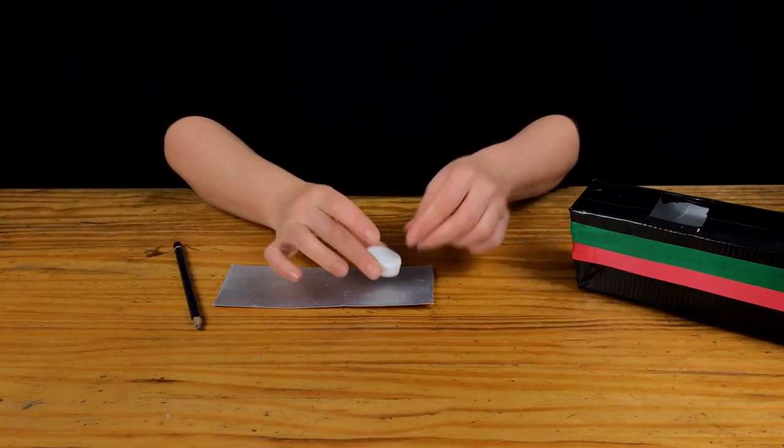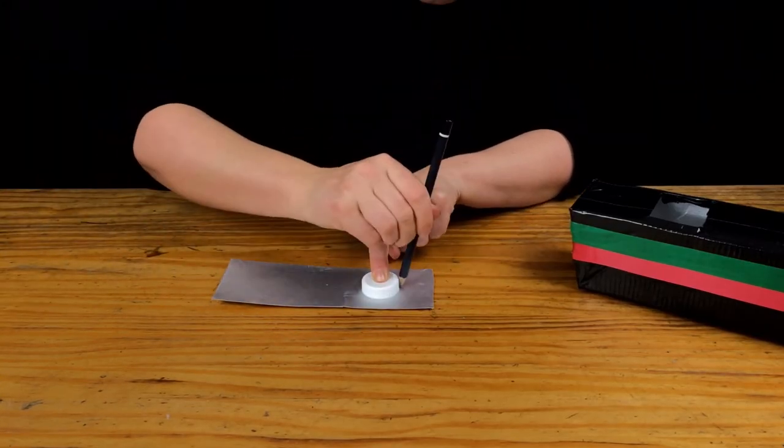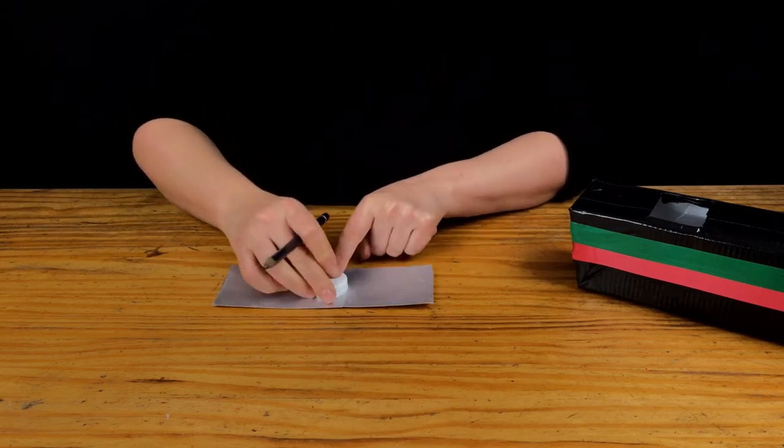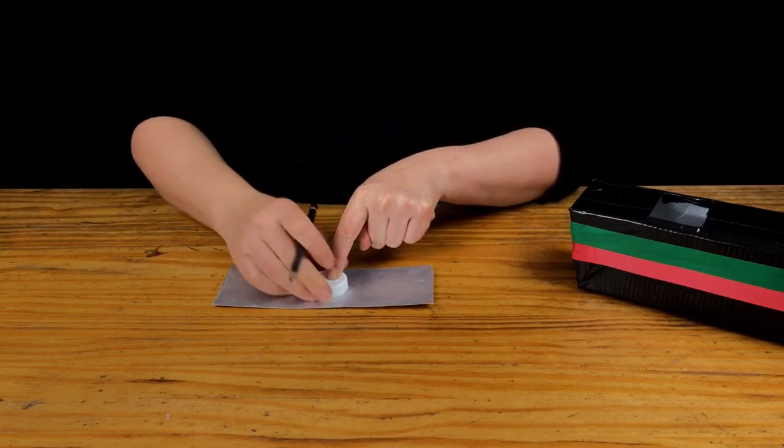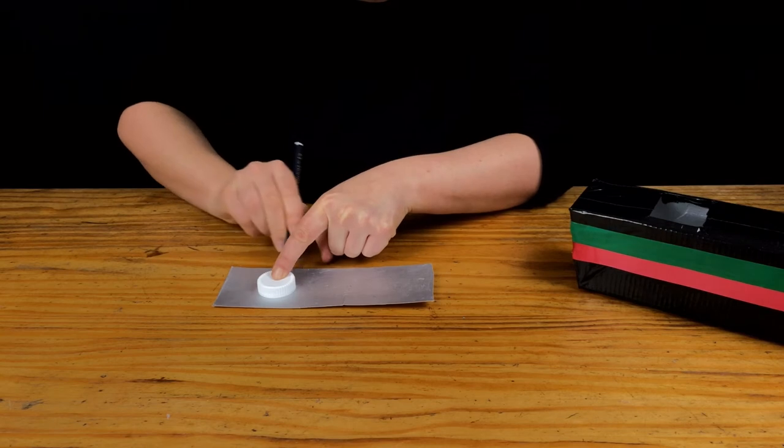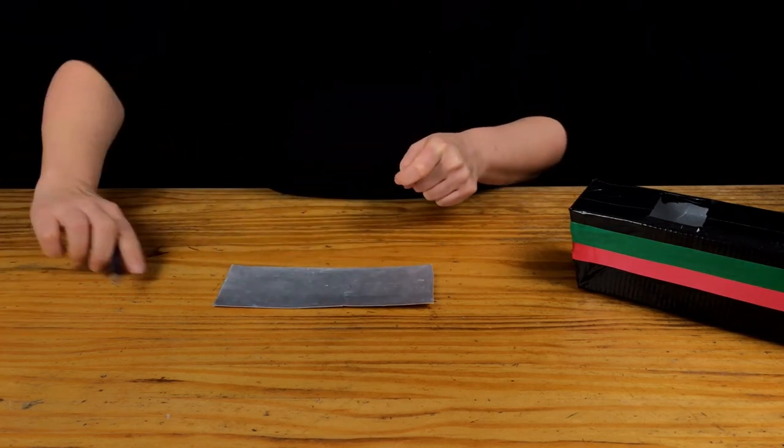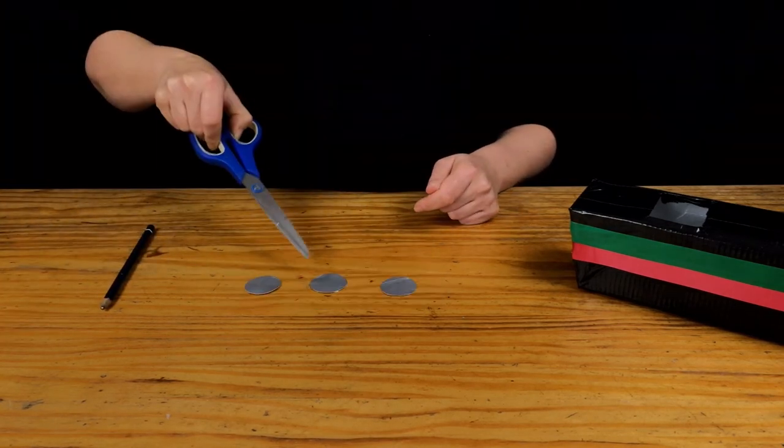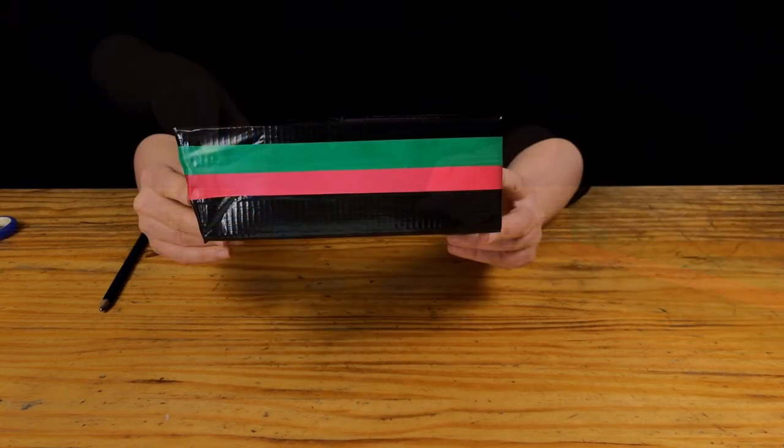Now to make the portholes. Use the lid to draw out some circles on your coloured card. Here I have used the side of another Tetra Pak carton as it has a nice silver effect. Cut them out and glue them onto the side of the ship.